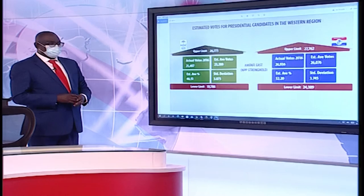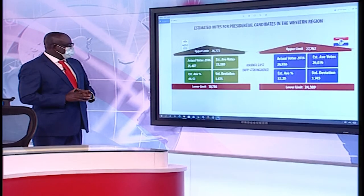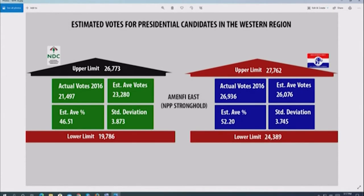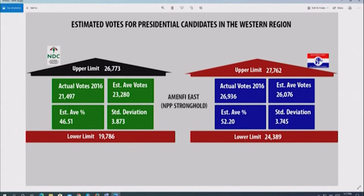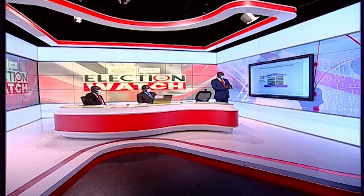Ahmafi East is another NPP stronghold. Their estimated average is 52.2% with 26,000 votes; they actually had 26,936 — about 900 votes in excess of their average. NDC's estimated average was 46.5%, translating to 23,000 plus, but they only had 21,000, falling short by about 2,000 votes. Again, NPP has shown dominance in their stronghold.